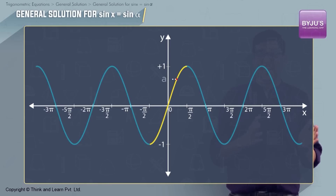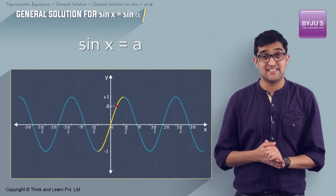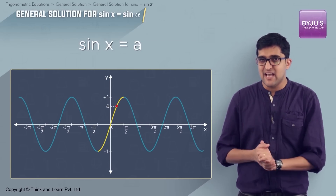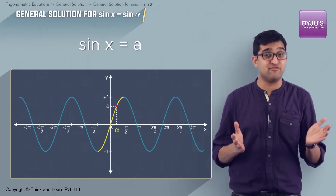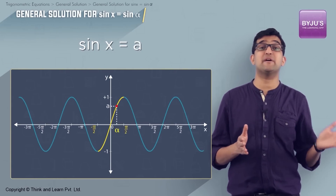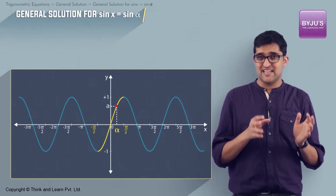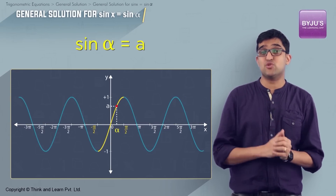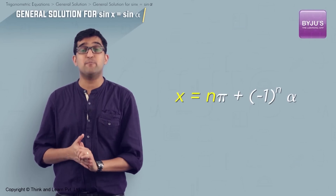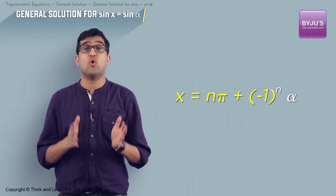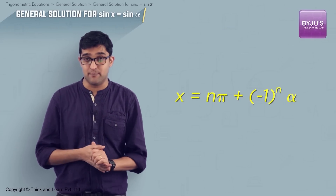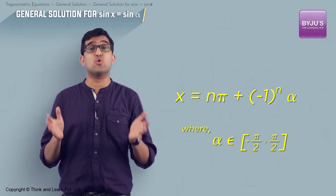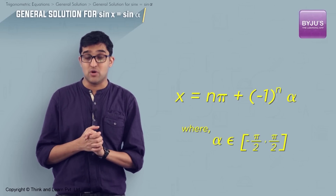Let a be such a value and the equation will be sin x = a. Then identify the angle α in the interval [-π/2, π/2] such that sin α = a. The general solution for this equation will be x = nπ + (-1)^n · α, where α belongs to the closed interval [-π/2, π/2].